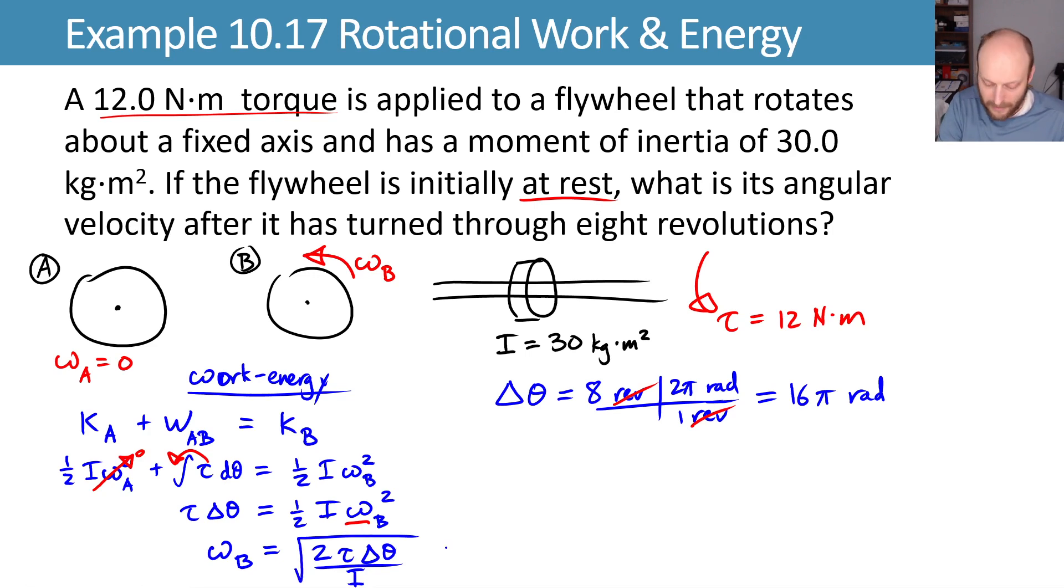We'll plug in our values, twice the torque of 12 newton meters, times our angular displacement that we'll plug in in radians to make the units work out, 16 pi radians.